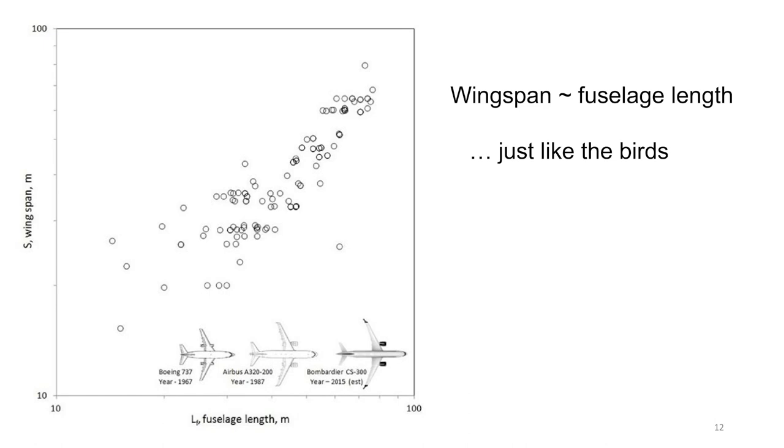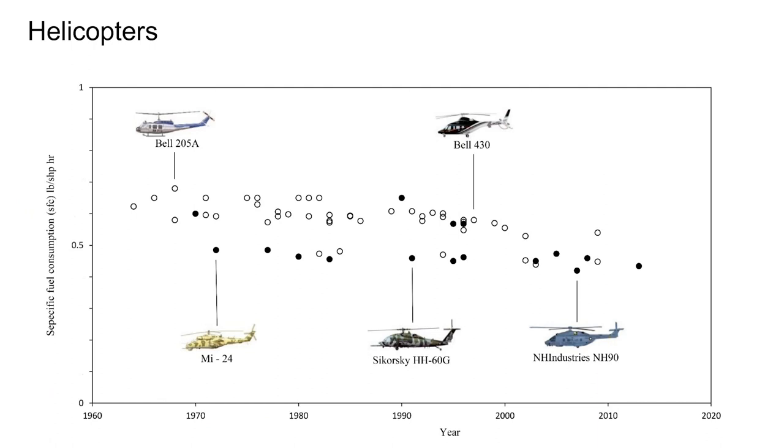In the same way, with the Constructal Law, we have predicted that the wingspan and the fuselage lengths should converge toward a proportionality close to one-to-one, as you see here in the cloud of data that has been racing upward from decade to decade. Also, helicopters coincidentally, or I should say not coincidentally, have been converging in the same evolutionary direction.